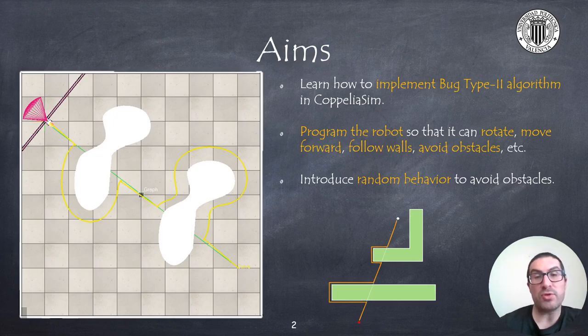I will explain how to program the robot so it can rotate, move forward, follow walls or avoid obstacles. Additionally, I will show you how to introduce some randomness to whether you want to avoid the obstacles following the wall on the left or on the right.